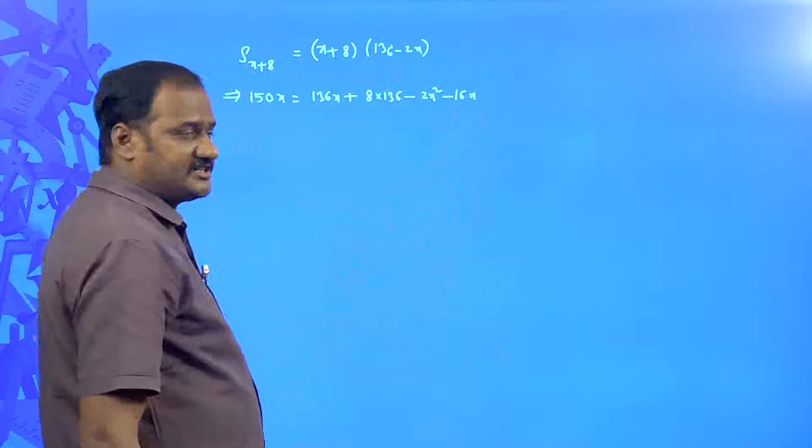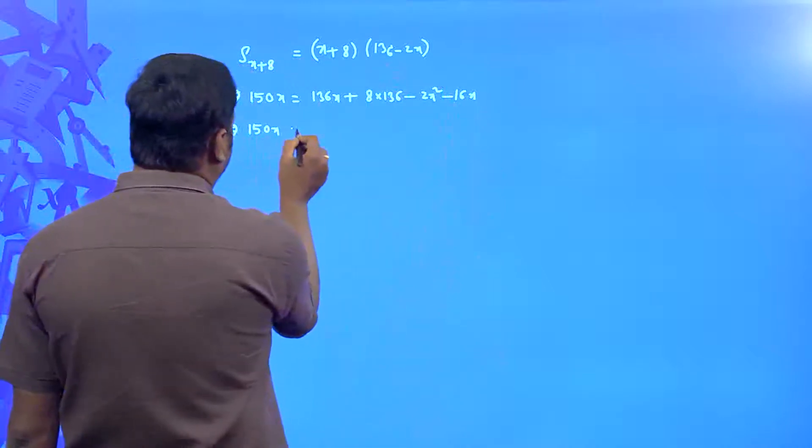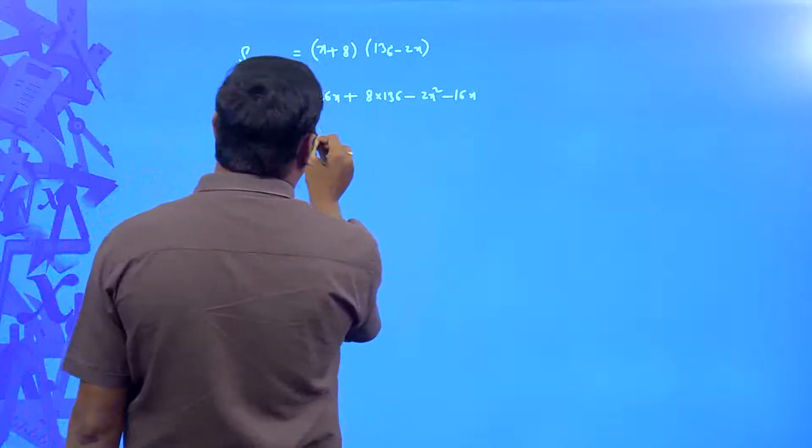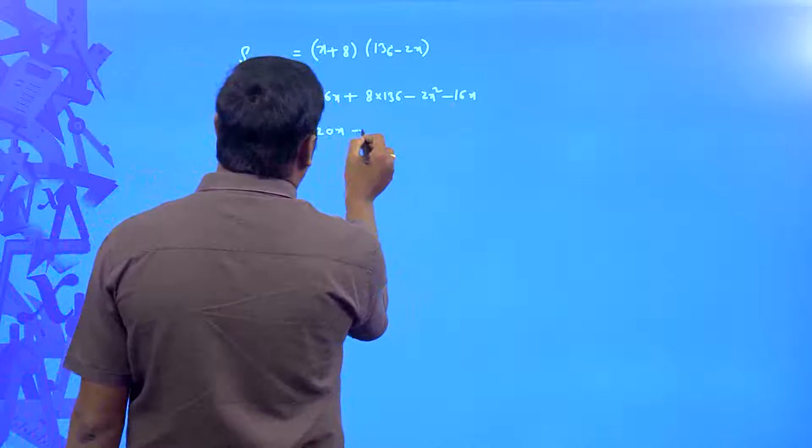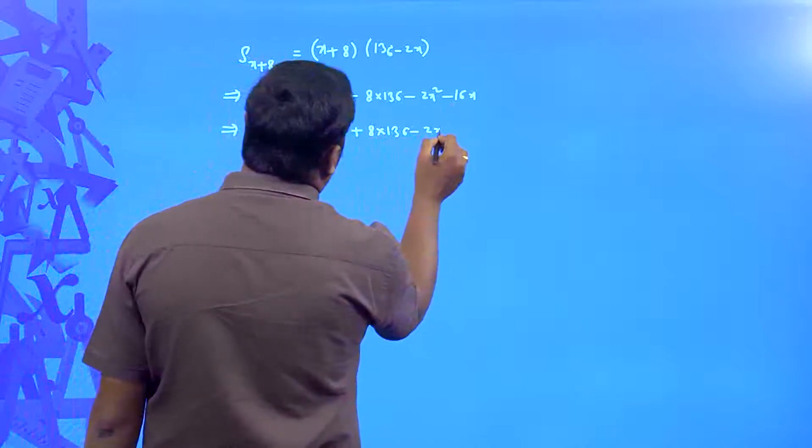Then when you transpose everything towards this side, it is going to be 150x is equal to, first let us simplify this, 136 minus 16 is equal to 120x plus 8 into 136 minus 2x square.